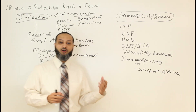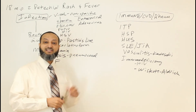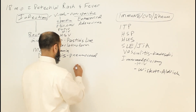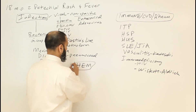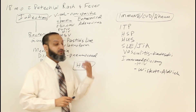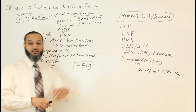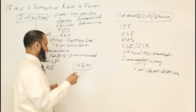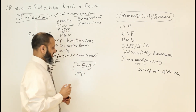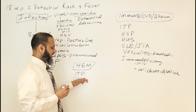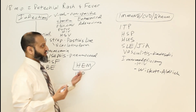Moving on to the hematologic category: causes of petechial rash and fever. We already mentioned ITP — low platelets causing petechial rash, usually without fever.